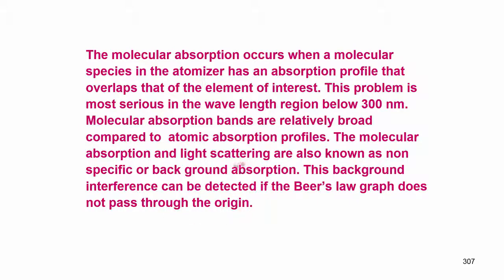This background interference can be detected if the Beer-Lambert calibration curve does not pass through the origin. In atomic absorption, you take standard solutions of 1, 2, 3, 5 ppm etc., measure the atomic absorption by aspirating into the sample, and plot absorbance versus concentration. If the calibration line does not pass through the origin, it indicates some amount of background interference.